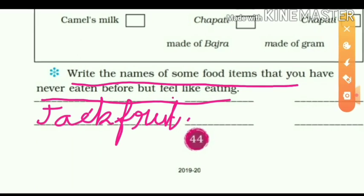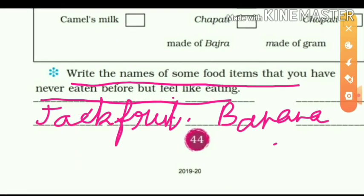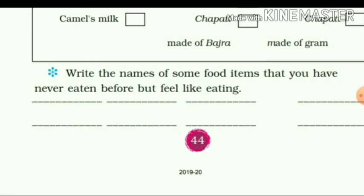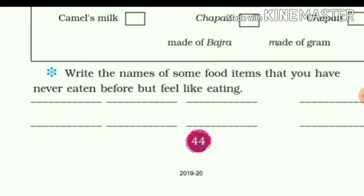Examples include jackfruit and banana flower, which grow basically in Kerala. I hope you understood this chapter. You will do all the exercises given in your book. If you face any problem, you can ask me. Thank you, have a nice day.